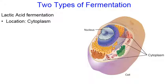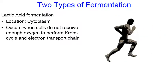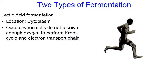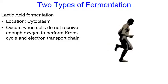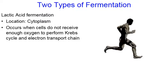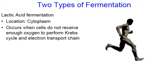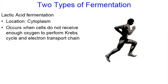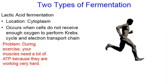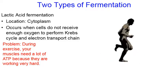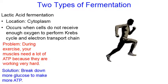Lactic acid fermentation occurs in the cytoplasm when cells are not receiving enough oxygen to perform the Krebs cycle and the electron transport chain. This happens in human cells, particularly in muscle cells. You might think: how come our cells aren't getting enough oxygen? Well, in our animation we have a person running during exercise. Your muscles need a lot of ATP because they're working really, really hard.